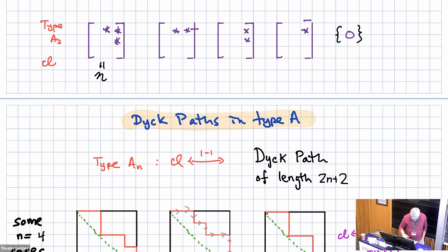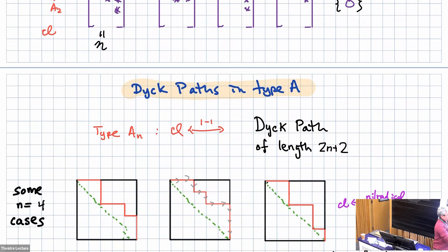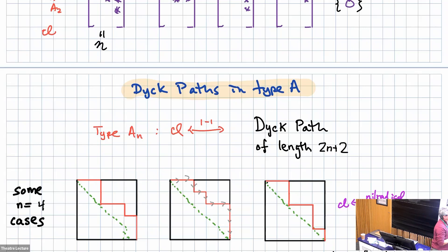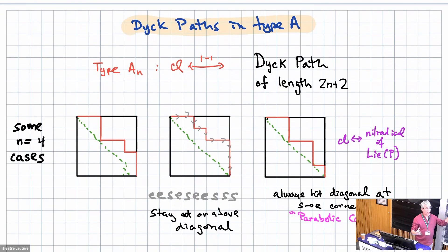This might look familiar if you know what a Dyck path is. In type A, these are parametrized by Dyck paths. In type A rank N, the Dyck paths have size 2N+2. For N equals four, rank four, GL5, you're always going east and south. You can touch the diagonal but you can't go below it. Every time you go south and then east, you hit a diagonal — you'll recognize that as the nil radical of a parabolic sub, a special case of one of these sub-algebras.